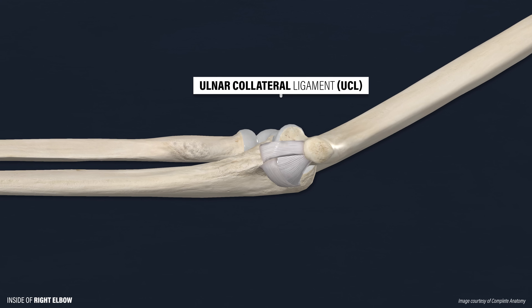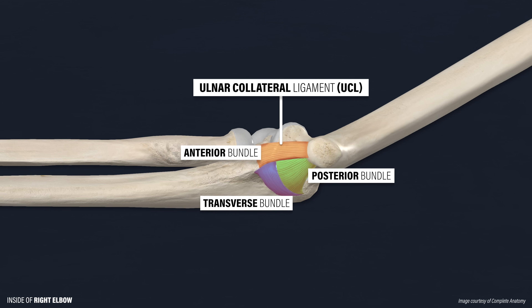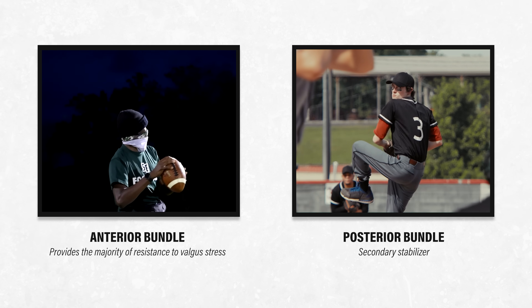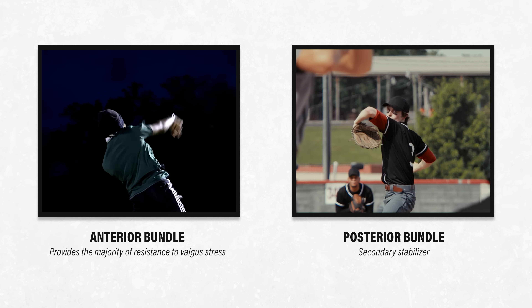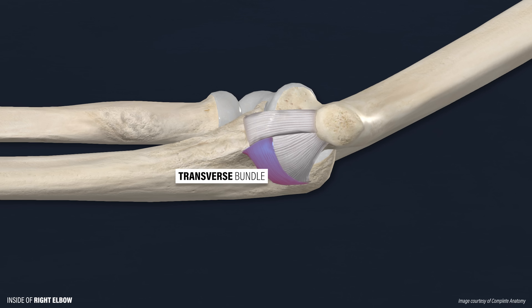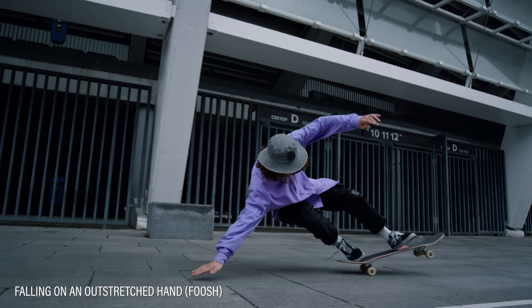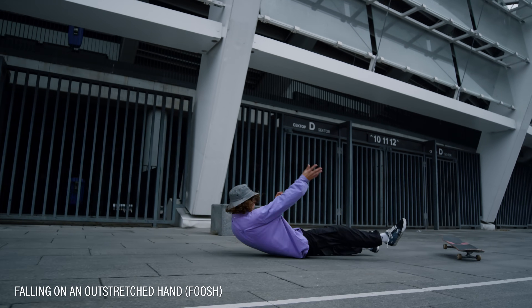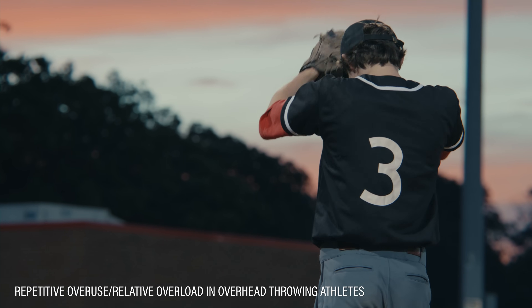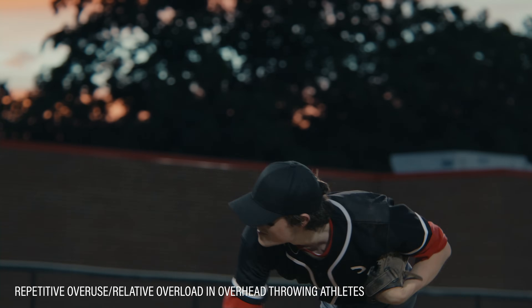The ulnar collateral ligament, or UCL, is located on the inner portion of the elbow and is made up of three distinct bundles: anterior, posterior, and transverse. The anterior bundle provides the majority of resistance to valgus stress, while the posterior bundle is a secondary stabilizer. The transverse bundle does not actually cross the elbow joint. Although injuries can happen traumatically, such as from falling on an outstretched hand, they are typically associated with repetitive overuse or relative overload in overhead throwing athletes, particularly pitchers in baseball.